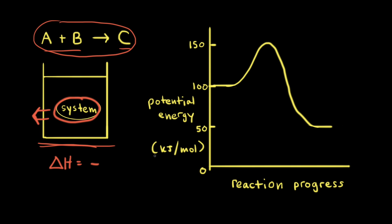We can determine the amount of energy that flowed from the system to the surroundings by looking at the energy profile for our hypothetical reaction. In an energy profile, potential energy is on the y-axis in kilojoules per mole, and reaction progress is on the x-axis. So as we move to the right on the x-axis, the reaction is occurring.